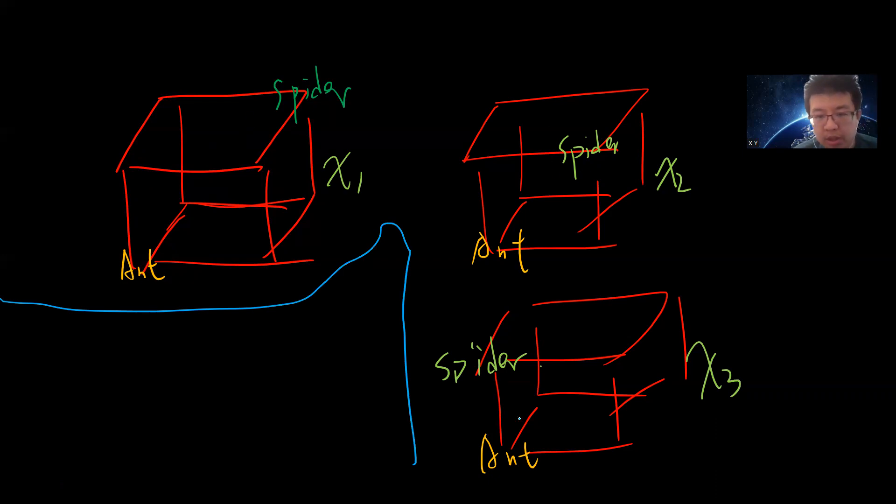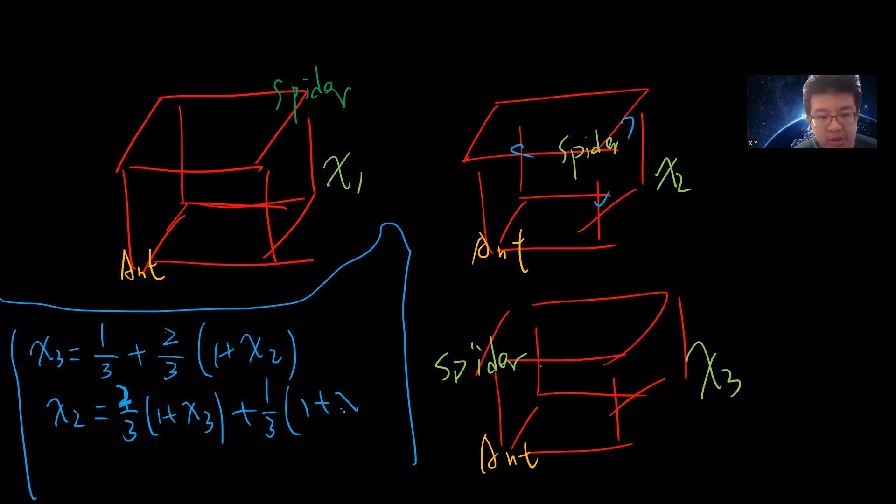Okay, so very simple. Let's consider x3. If I'm the spider and I go here, so x3, I have one third probability that I will reach the ant, and I have one third probability that I will become x2, and one third probability I will become another x2. So I have one plus two thirds times (1 plus x2), because I already took one step, so it should be 1 plus x2. Now let's consider x2. For this spider, I can go this way, this way, and this way. So for x2, I will have one third probability to reach the ant, but I have two divided by three probability that I will become x3, and I have one third probability to become x1.